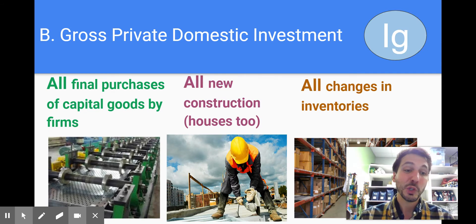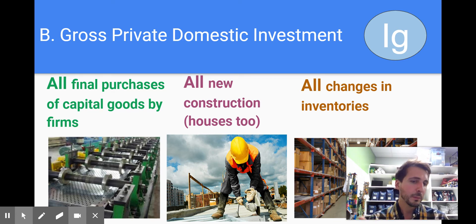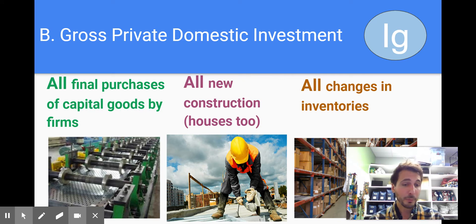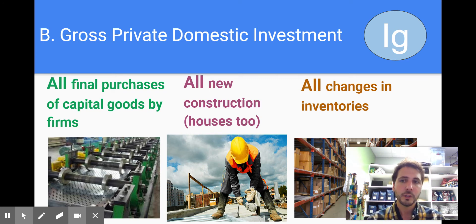IG has a long name — gross private domestic investment. Gross means all. Private means within the private sector, so businesses, not the government. Domestic means within the borders of our nation. Investment is the purchase of capital goods. We know capital goods make people more productive, so businesses have to buy those tools and capital goods.